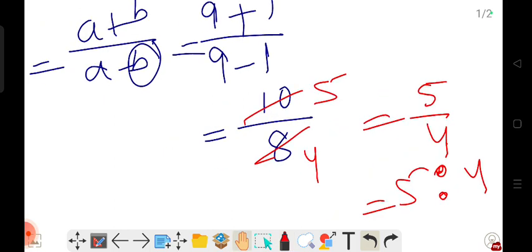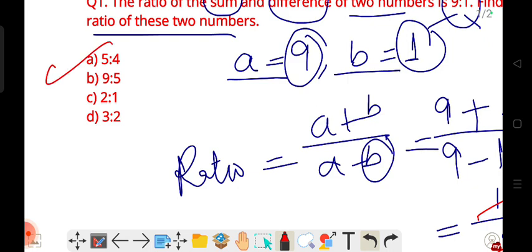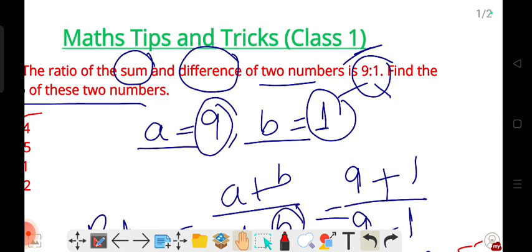5 is to 4 is here in the options. 5 is to 4, option A is the answer. Clear? If difference and sum are given for two numbers, and if we need the number's ratio.